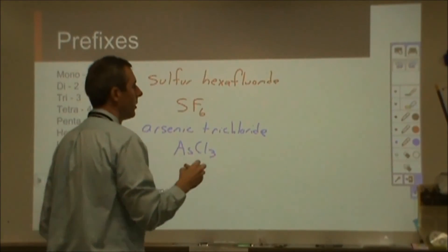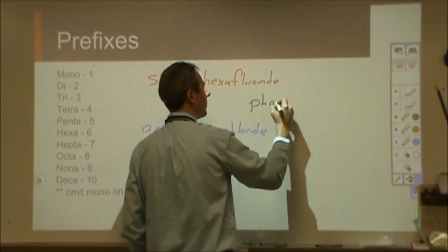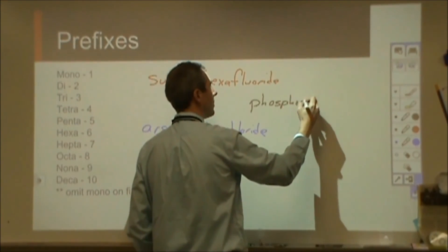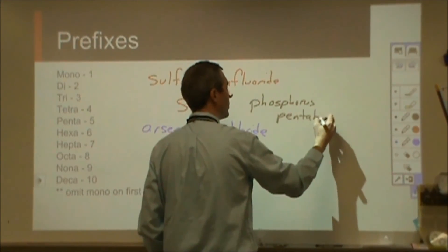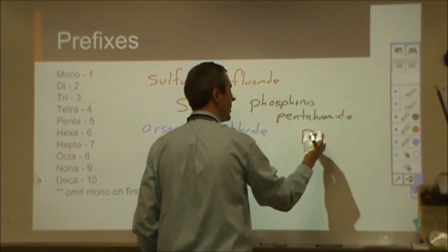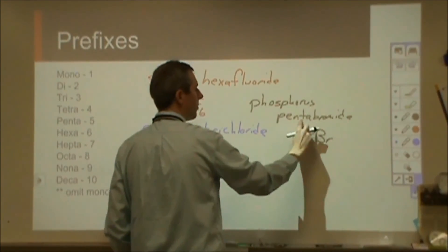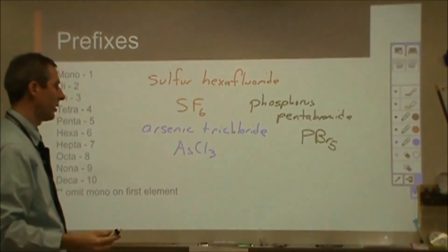And one more, let's say, phosphorus pentabromide. So the name there, phosphorus and bromine, we have P, we have Br. And then penta would be five bromines for each phosphorus in a particular molecule, so PBr5.